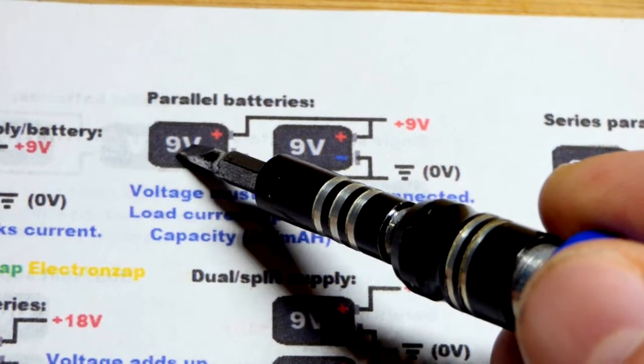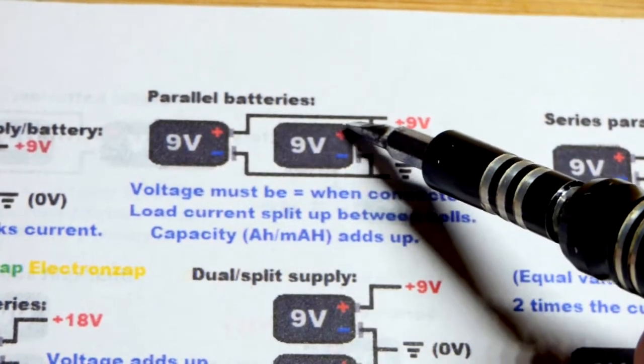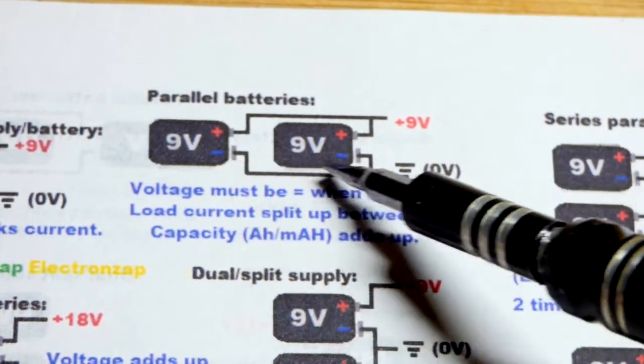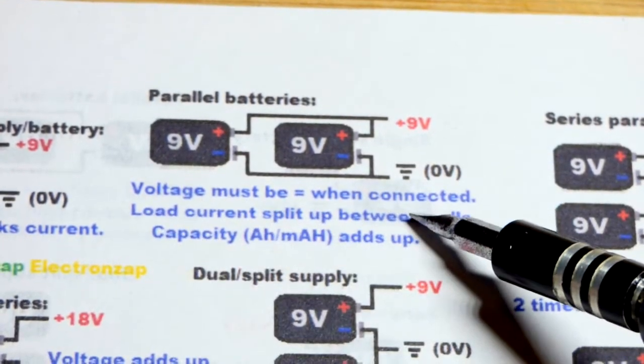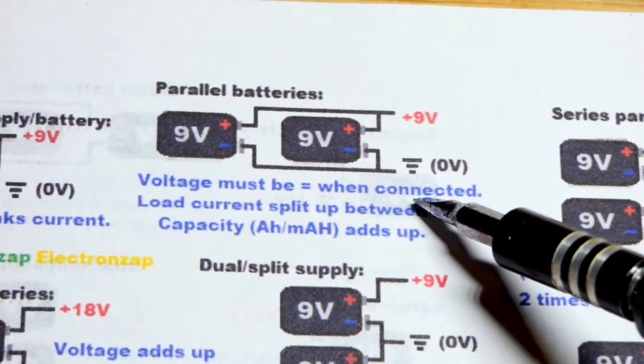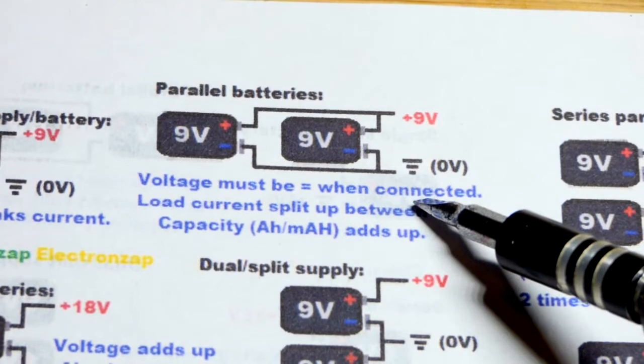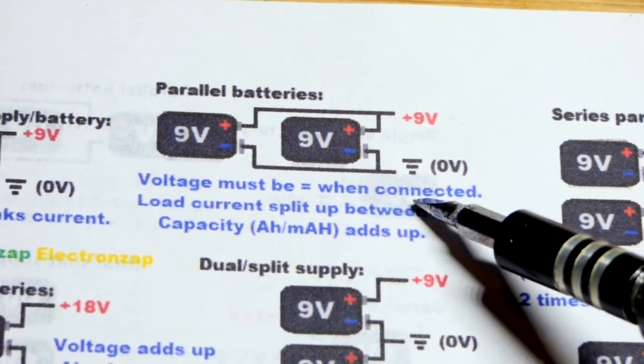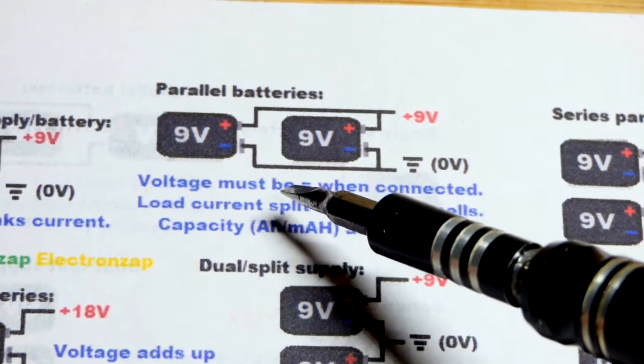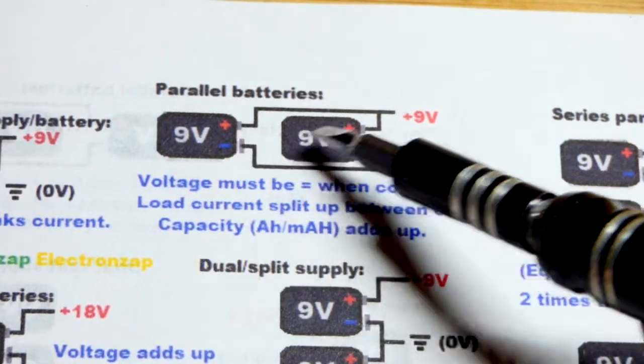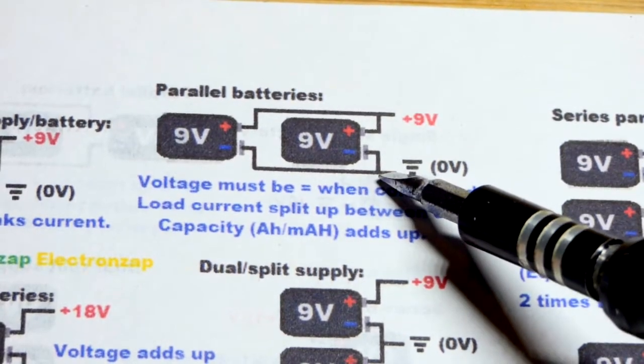So now, we have the other option. We can connect them in parallel. So I got positive of one to the other, negative of one to the other. So they must be the same voltage when connected. You want to use two completely brand new batteries, if they're 9 volt batteries, or that have been used the same amount of time, which means they'll have the same voltage across them.